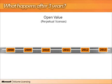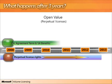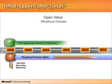Let's take a look at an example of how perpetual licensing works. For instance, Open Value — let's say your client were to start a new Open Value agreement in 2008. In this example, let's say they purchased Microsoft Office Professional Plus.